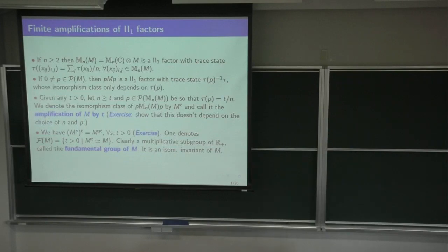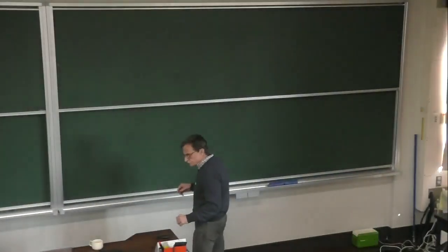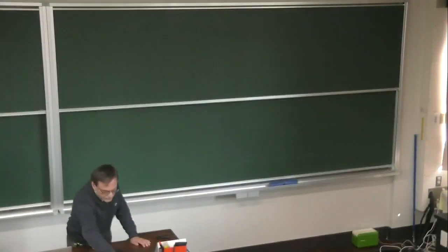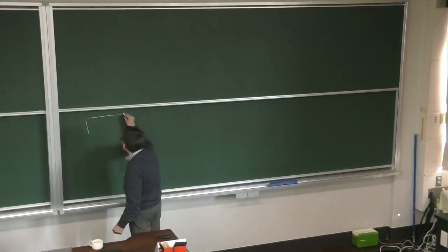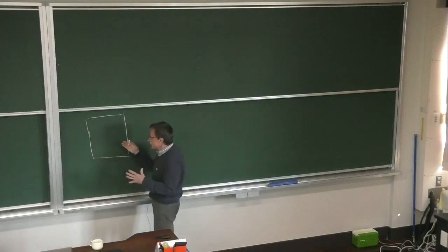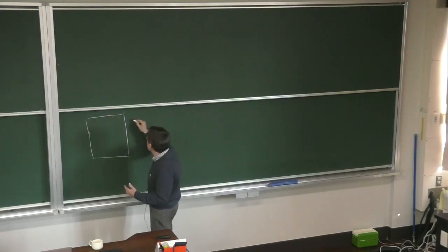This doesn't depend on n; you can take a much larger n, but then the projection you take has to satisfy that. The intuition is: remember the II₁ factors — we look at them as being like a matrix algebra, but instead of having indices from 1 to n for n by n matrices, here it's from 0 to 1. It's like a different kind of matrix algebra, especially the hyperfinite II₁ factor very clearly points towards this intuition.